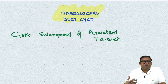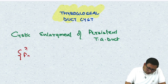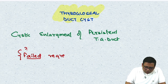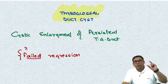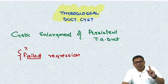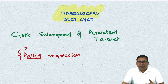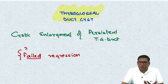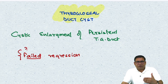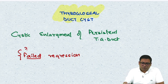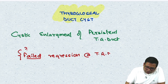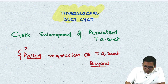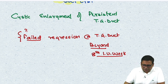The reason for persistence of the thyroglossal duct is failed regression. There is a deadline — if something has to be deleted, it should be deleted by the 8th week of intrauterine life, otherwise it will persist. For example, Meckel's diverticulum is a vitello-intestinal duct which failed to regress beyond the 8th week. So the thyroglossal duct failing to regress beyond the 8th intrauterine week of life is what causes this condition.